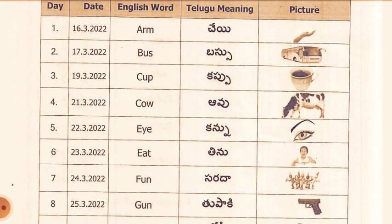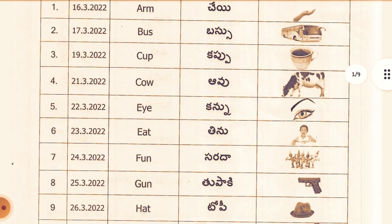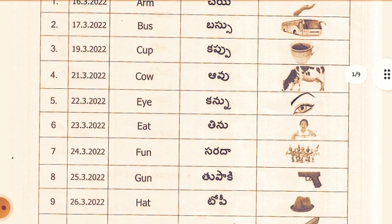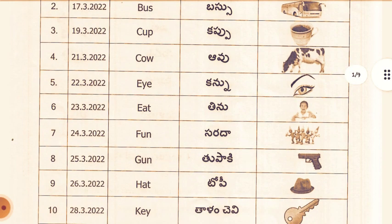23rd March: Eat. Telugu meaning: Dinu. 24th March: Fun. Telugu meaning: Sarada. 25th March: Gun. Telugu meaning: Tupaki. 26th March: Hat. Telugu meaning: Topi.